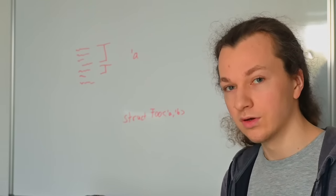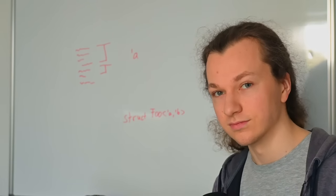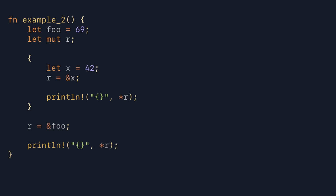First, let's have a look at another example which we'll use to introduce this other way of thinking about lifetimes. This example is similar to the previous one — again, we create a reference to x in the inner scope and assign that to r. Only this time we print the value inside the inner scope. Then afterwards, in the outer scope, we reassign r to point to foo, which is declared at the start of the function. And again, we print what r points to at the end. However, this time the code is valid, even though r is used as a reference in the outer scope, because it was reassigned to point to foo before the read.